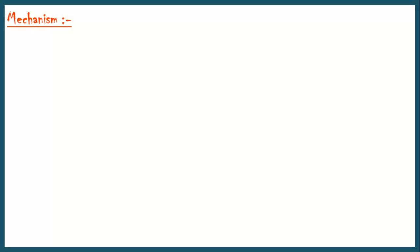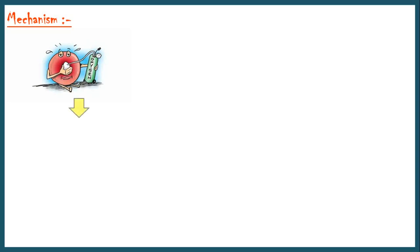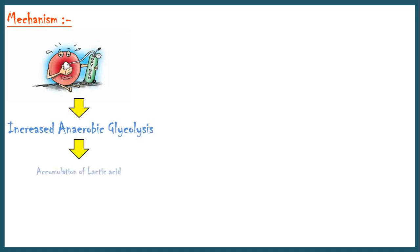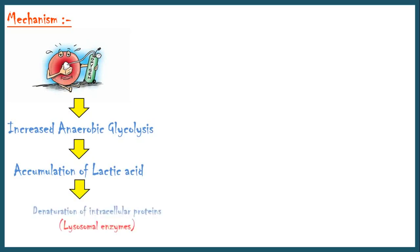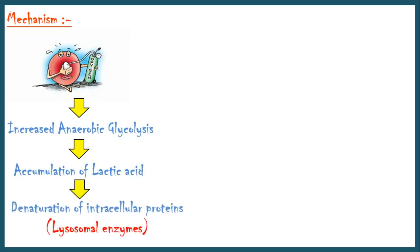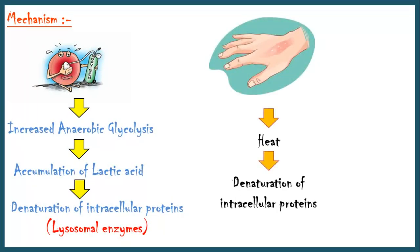The mechanism of coagulative necrosis is as follows. Injurious agents like hypoxia reduce the activity of aerobic glycolysis and increase the activity of anaerobic glycolysis. As a result, lactic acid tends to accumulate within the cells. This increases the cellular acidity and causes denaturation of intracellular proteins, including lysosomal enzymes. Denaturation of lysosomal enzymes prevents the cells from being digested by autolysis. In case of burns, heat directly causes denaturation of intracellular proteins and leads to death by necrosis.